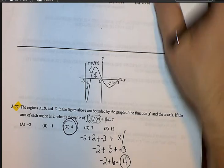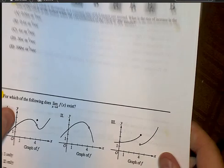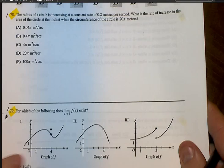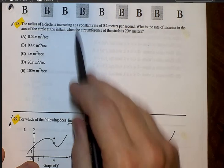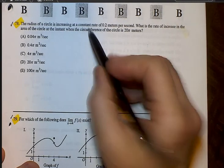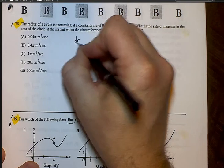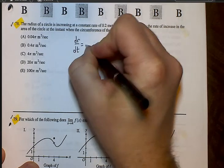Okay, very easy question without a calculator. Number 78, here's your related rates question. They say the radius of a circle is increasing at a constant rate, so if the radius is increasing, that's dr/dt, and that's going to be at 0.2 meters per second.